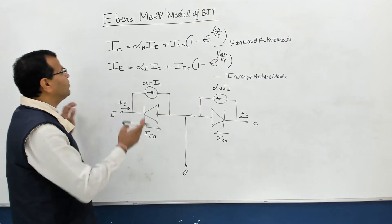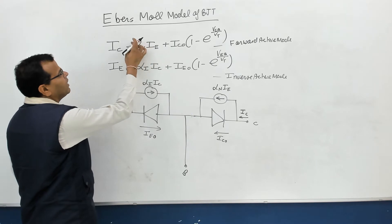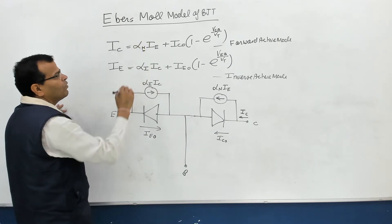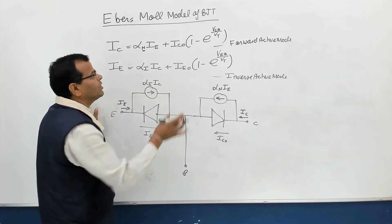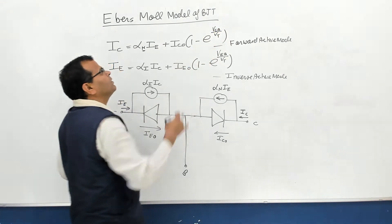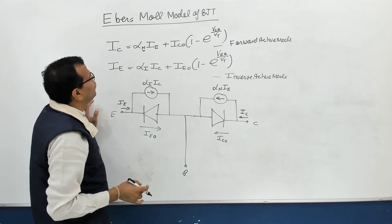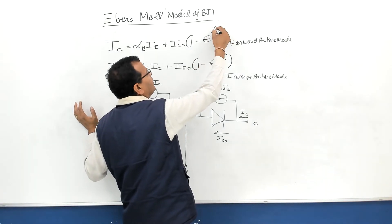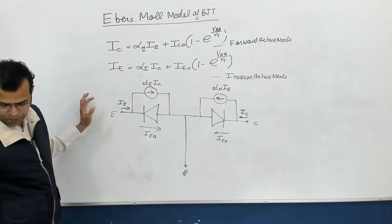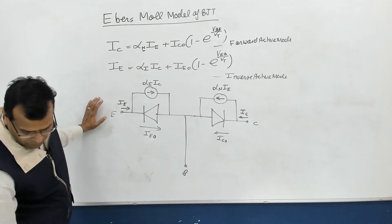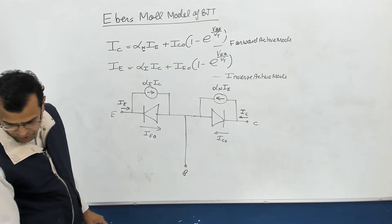So in forward active mode of operation, the collector current is alpha_F into I_E. Alpha is the current gain for common base configuration for normal mode of operation, which is also called forward active mode. IC0 is the reverse saturation current at the collector junction. The voltage is VBE — that is, the base-emitter junction voltage. Please remember this is VBE.